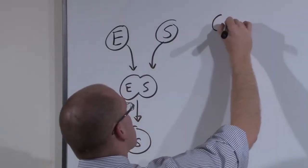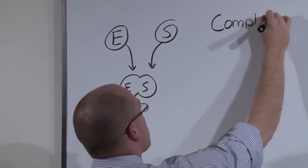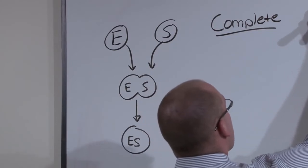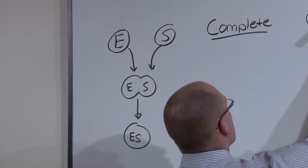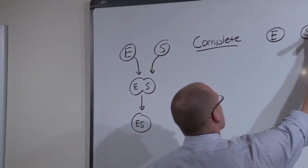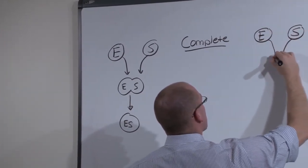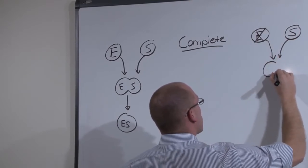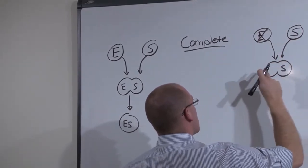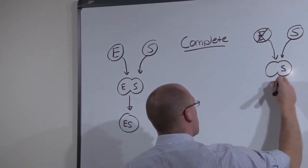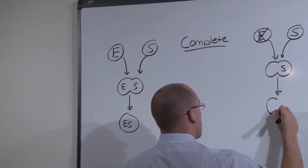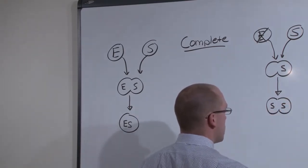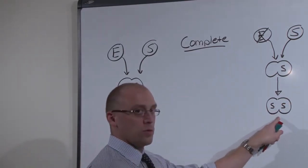In a complete mole, what happens is that an egg is supposed to contribute its genetic material in a normal fertilization pattern. But there is no egg component. So a normal fertilization occurs, but it's missing that egg component. So in order to fill the full genetic complement, the sperm simply doubles its genetic code. And all of a sudden you have an abnormal fertilization.